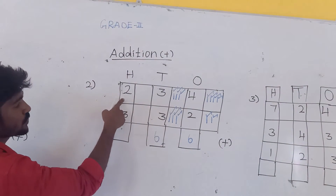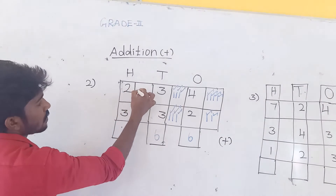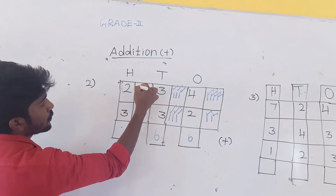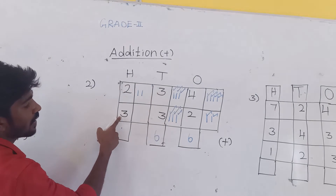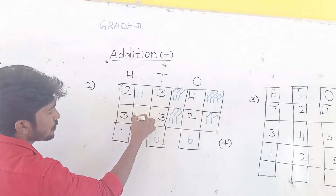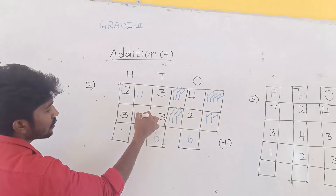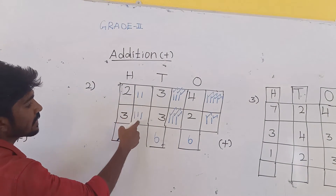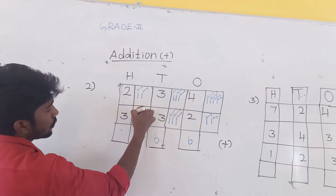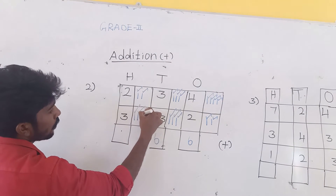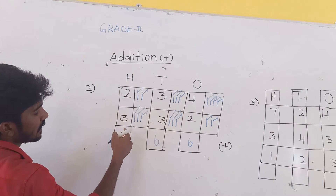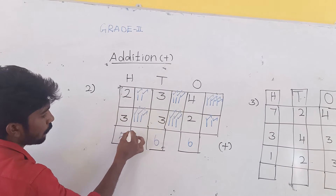The last one, 100s value. First number is 2, so draw 2 lines. Then the second value is 3, so draw 3 lines. Now add these lines: 1, 2, 3, 4, 5. So 2 plus 3 is equal to 5. That's all.